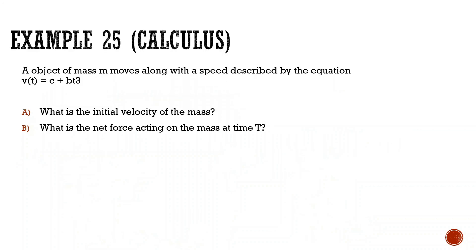One last problem: an object of mass m moves with speed described by v(t) = c + bt³. What is the initial velocity of the mass?